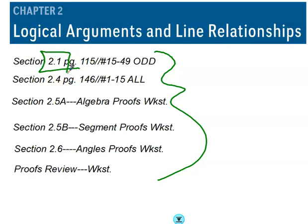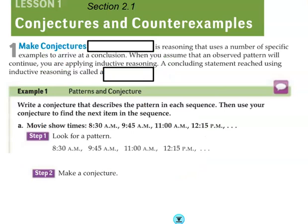This is 2.1, the start of your proofs unit. There's only a few lessons, so make sure to stay on it. You have the notes like I do, and you're going to be filling them in as I do up here. So making conjectures. Inductive reasoning is reasoning that uses a number of specific examples to arrive at a conclusion. When you assume that an observed pattern will continue, you're applying inductive reasoning. A concluding statement reached using inductive reasoning is called a conjecture, hence the name of this section.